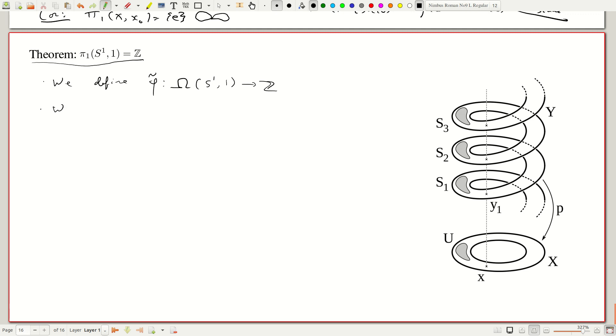We show this induces. So, we show, well what do we have to show? If α is equivalent to β, then φ̃(α) equals φ̃(β). And so, what we get from that is that we have φ, which maps π₁(S¹,1) to ℤ.